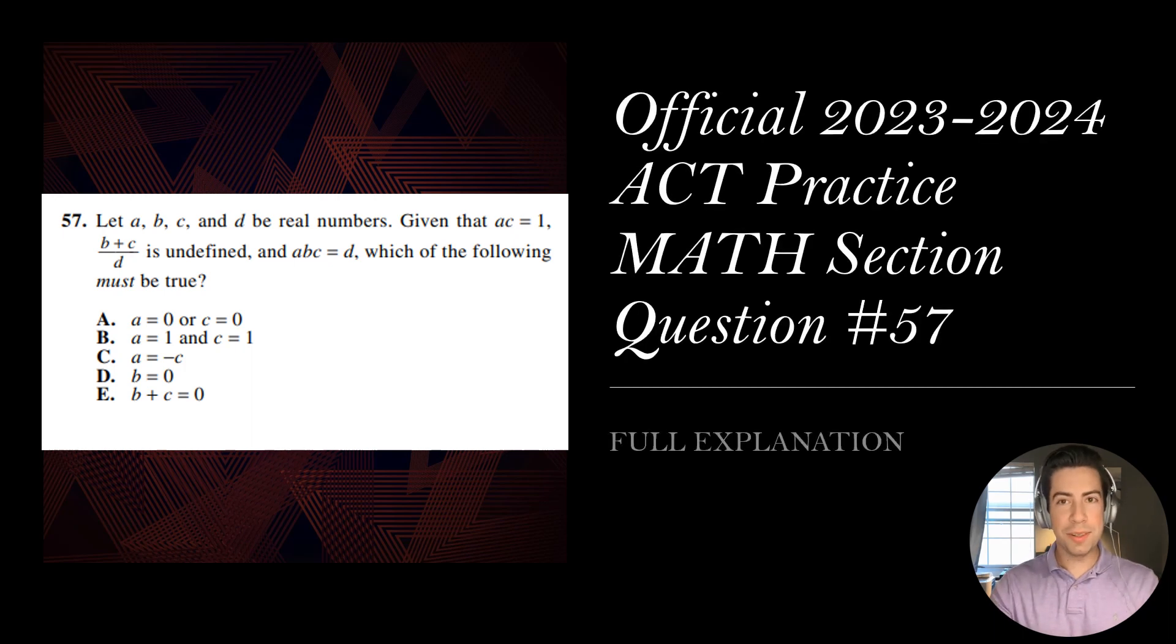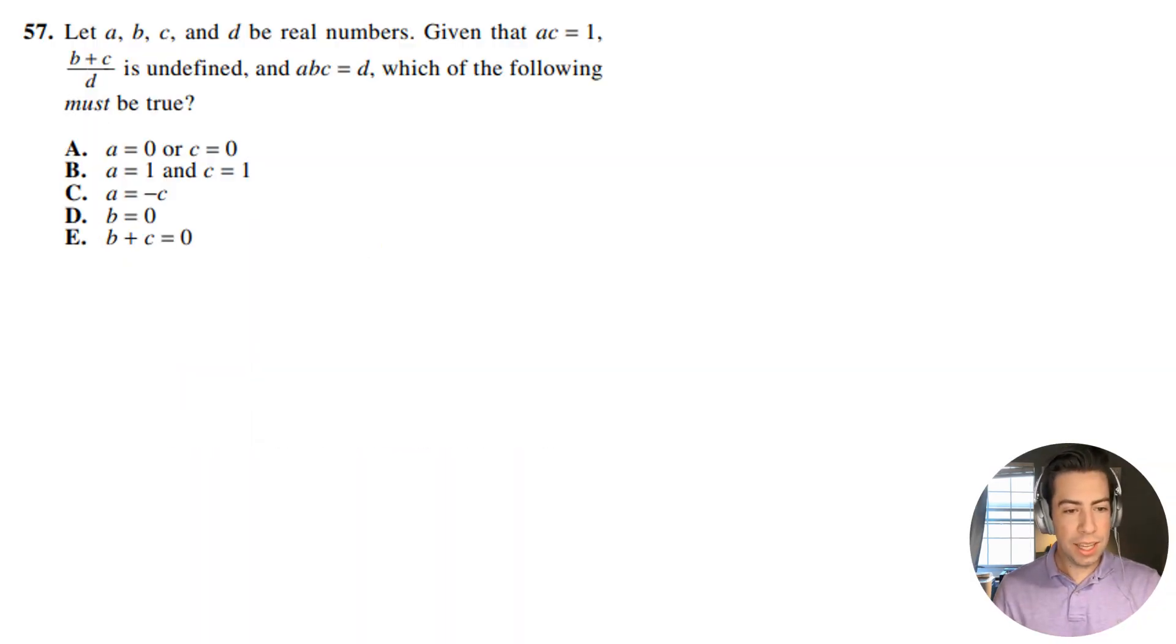All right, question number 57, let's get right into it. So we have let A, B, C, and D be real numbers given that AC equals 1, B plus C divided by D is undefined, and ABC equals D. Which of the following must be true?